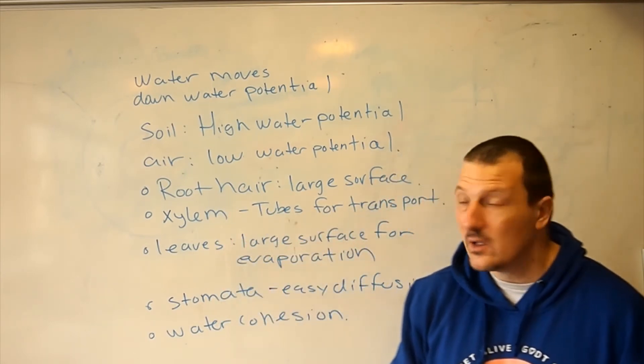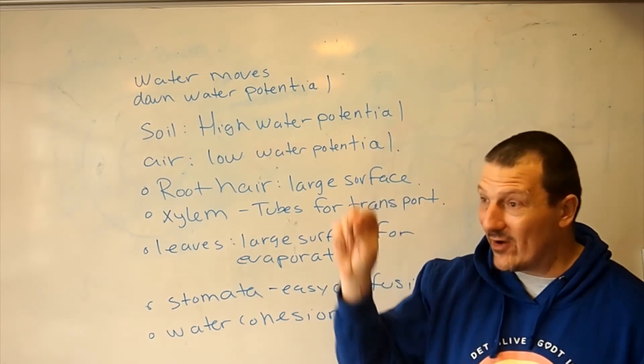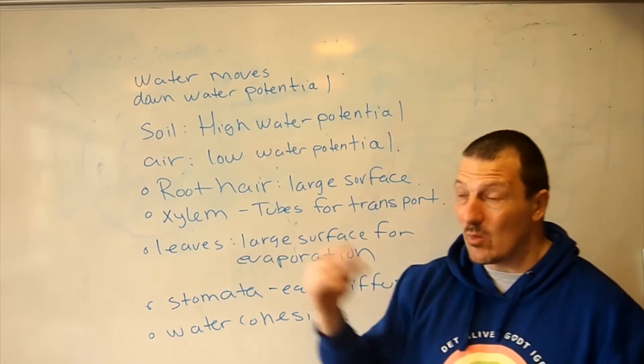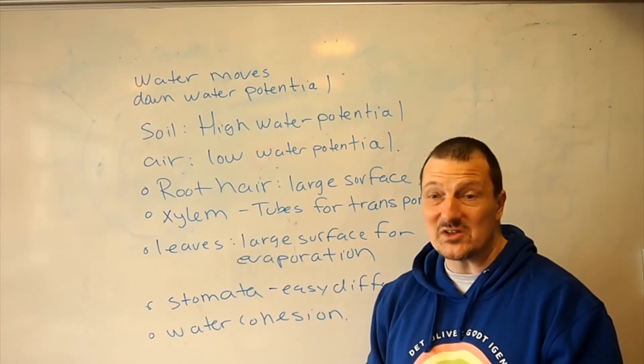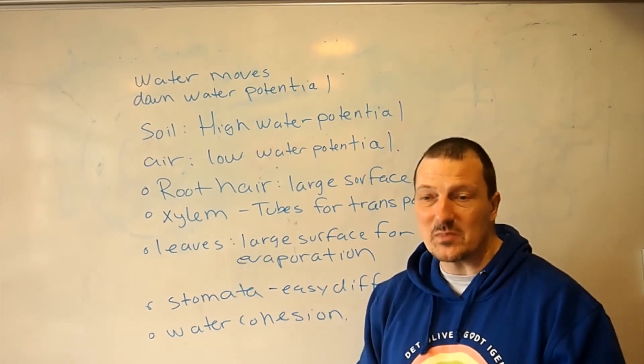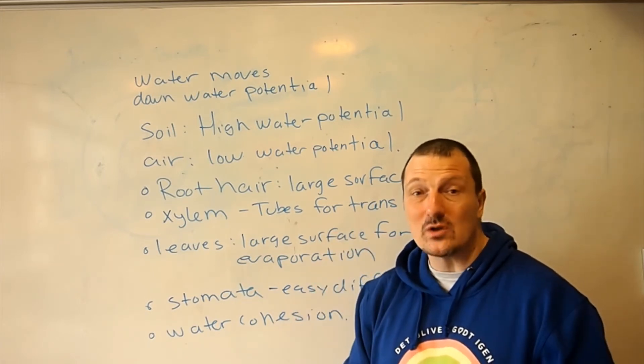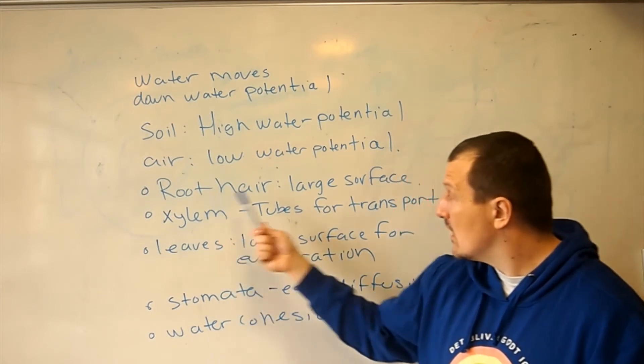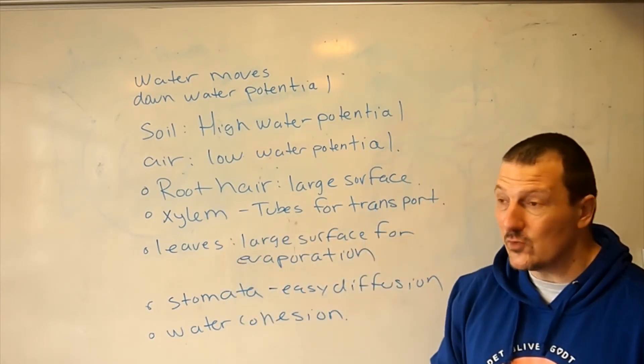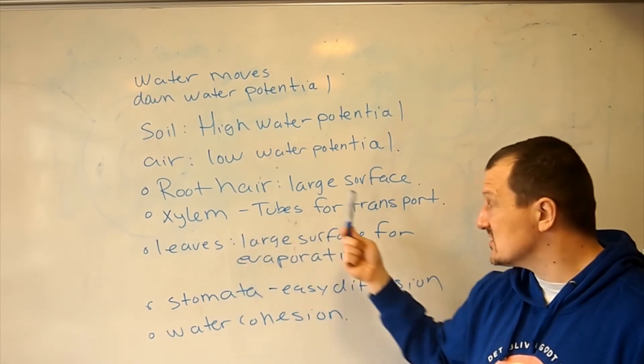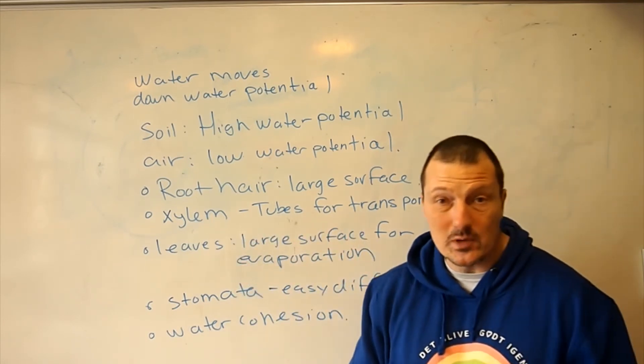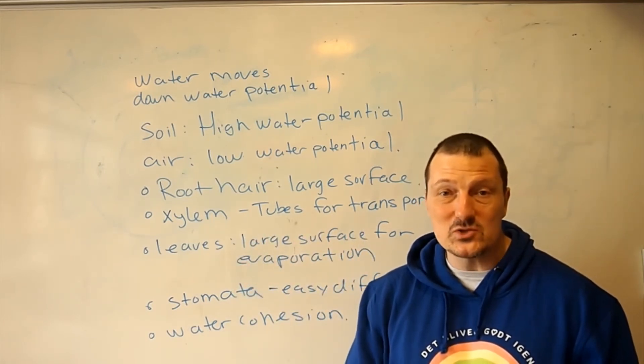We have the root hairs, which have a lot of small areas where water can diffuse in, which all in all gives a large area. They have a very short diffusion distance. So they give a large surface area for diffusion into the plant. Now you have the xylem that functions as a tube that can carry the water up to the leaves.